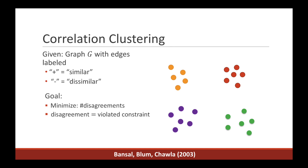In machine learning, correlation clustering is a general framework for doing cluster analysis. Given some objects and information about which pairs are similar or dissimilar, we would like to group the objects into clusters so that similar objects are together and dissimilar ones are apart. This problem is distinct from other problems such as k-means clustering because we don't make any assumptions about how many clusters there are. Instead, we would like the algorithm to discover this information by itself.